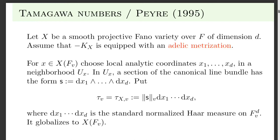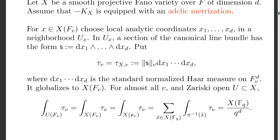Because we have a metrized metric, you know what the norm of that section is — that's denoted with these double brackets. Then you multiply it with a Haar measure on Fv to the d, normalized in some way, and locally you get a measure. When you change coordinates going from chart to chart, you have to write down the absolute value of the Jacobian. It turns out this thing, defined locally, globalizes over the whole projective variety. The main result is that for almost all places, integrating over the open piece is the same as integrating over the whole thing.